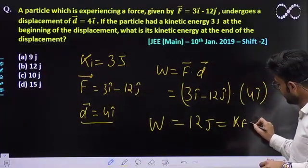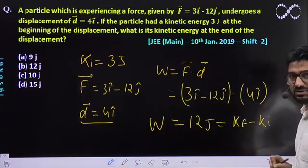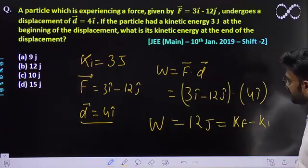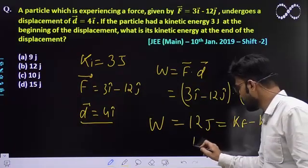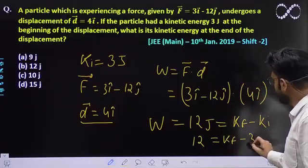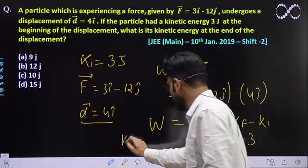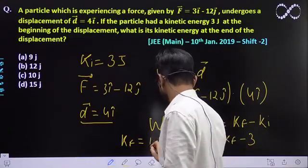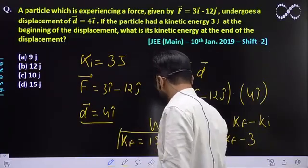K final minus k initial, hai na? Initial kinetic energy body ka already 3 hai. So 12 is equal to k final minus initial 3 joules. Ye udar jayega, to k final is equal to final kinetic energy of the system would be equal to 15 joules.